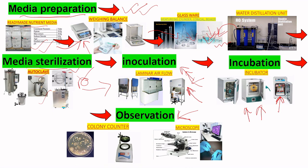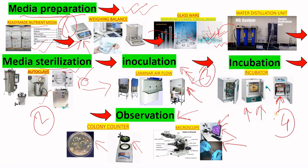After incubation we observe whether the microorganisms grew on our media. In the petri plate we see colonies that appeared after incubation. We count these colonies using a colony counter. If we want to see the morphology of the microorganisms, we use a microscope and can capture data on our computer. The five steps are: media preparation, media sterilization, inoculation, incubation, and observation.